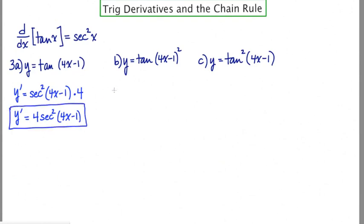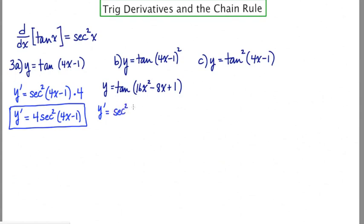In part b, we're supposed to take the derivative of tangent of (4x − 1) squared. What I've done in the other b problems is square out the argument first before taking any derivatives. So y equals tan(16x² − 8x + 1). Now I'm ready to take the derivative. The tangent of something gives secant squared of that same thing, times the derivative of the inside, which is 32x − 8.